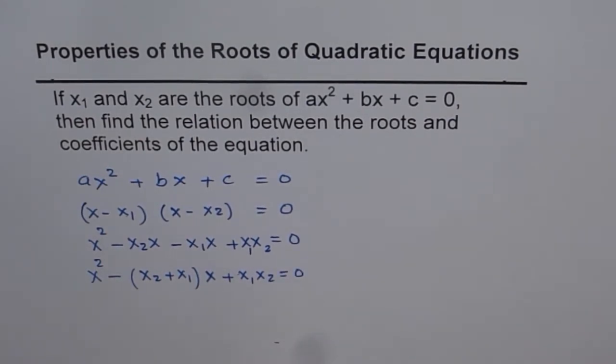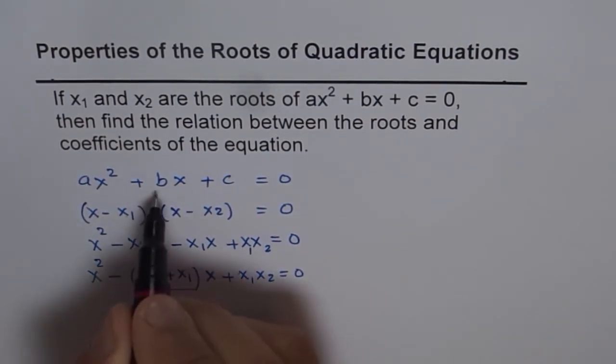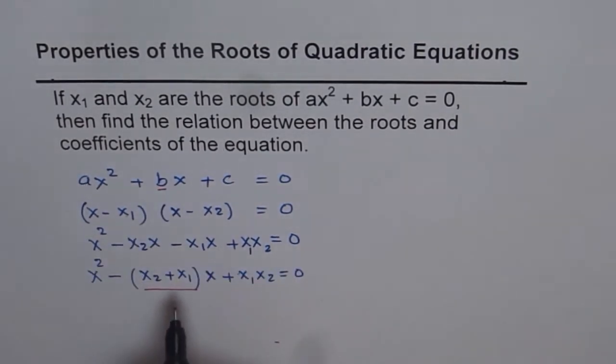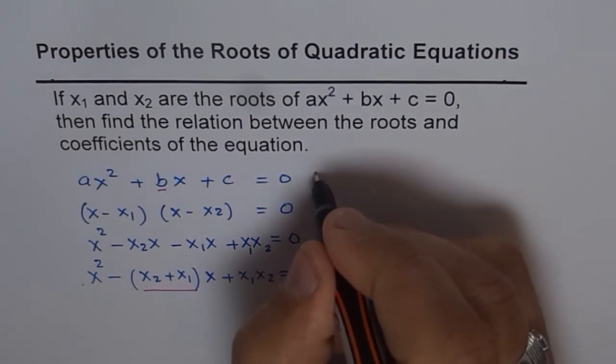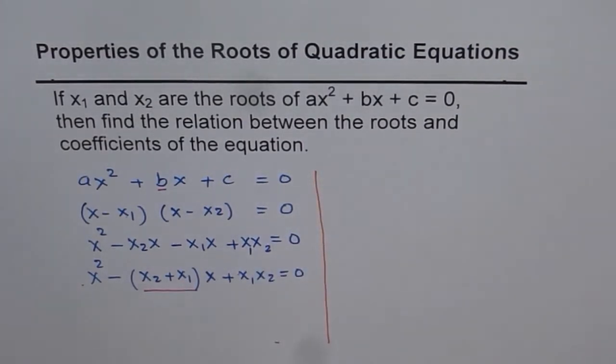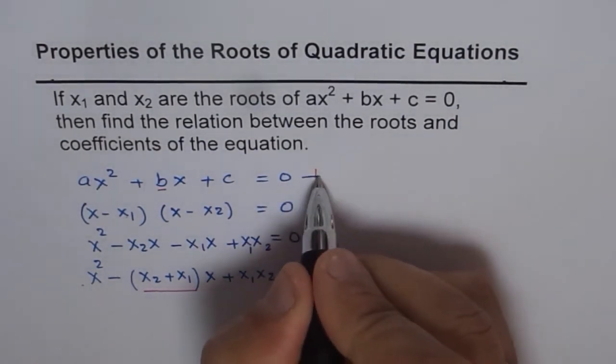Now, if you compare the given equation with the expanded form, what do we see? We see that the center term is equal to b. But here we have a but the coefficient is 1. So what we will do is we will factor out a and then compare the coefficients.